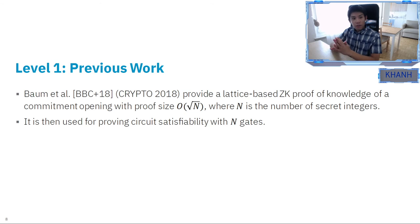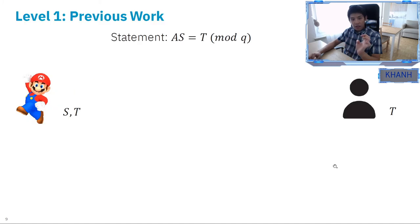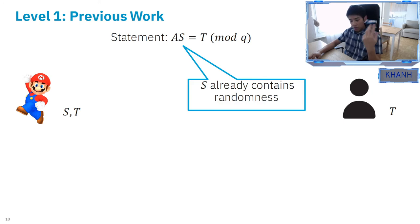Let's start with the level one which is the previous work. There's a paper at Crypto 18 by Baum et al. which provide the lattice-based zero-knowledge proof of a commitment opening with sublinear proof size. The commitment is the standard SIS commitment and the proof size is asymptotically square root of n where n is the number of secret integers. Later on they show how to use that for proving circuit satisfiability. The statement is As is equal to T mod q where A, S, and T are matrices and s already contains the randomness. The commitment is hiding and binding based on the SIS hardness.